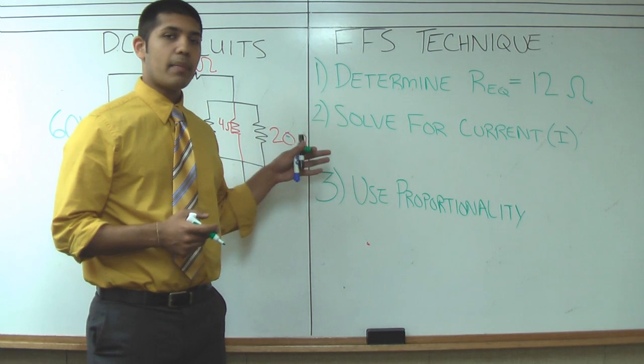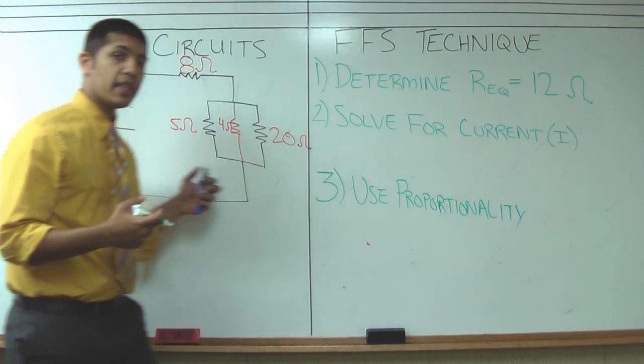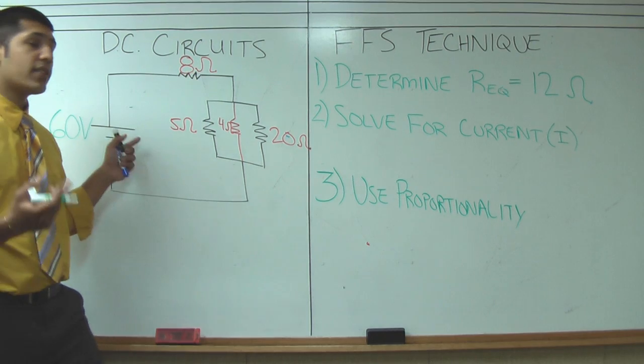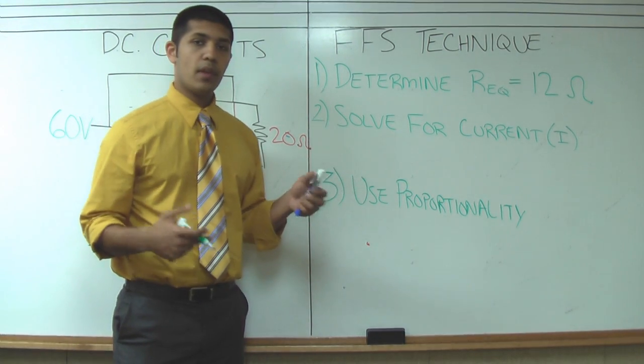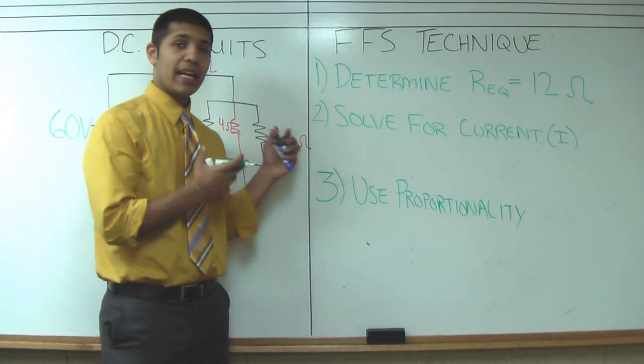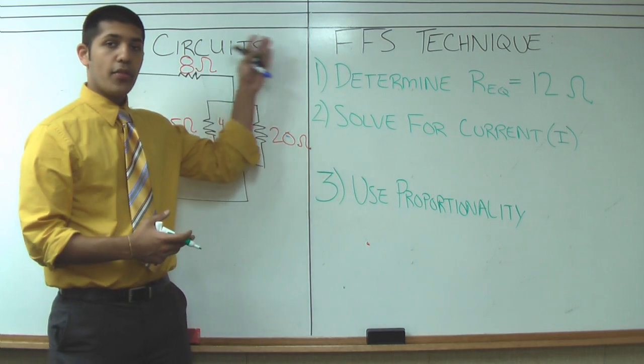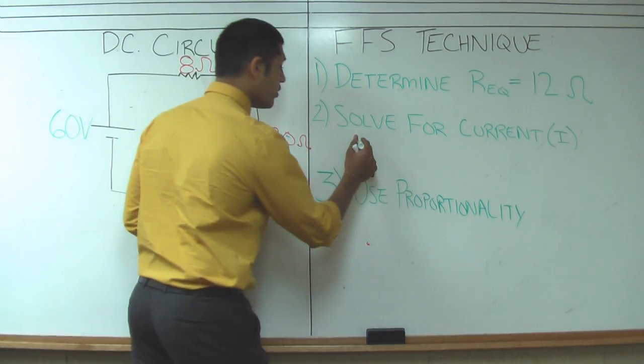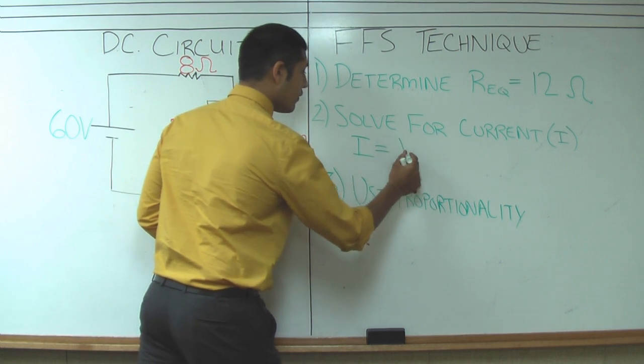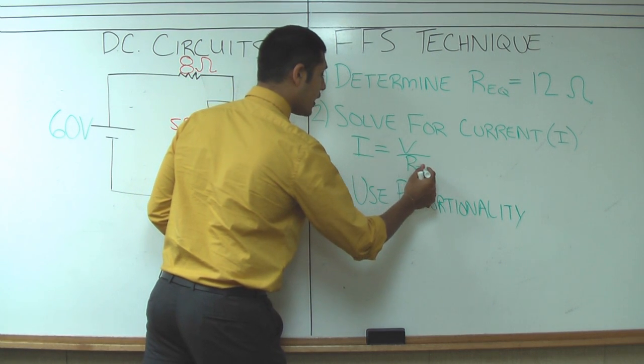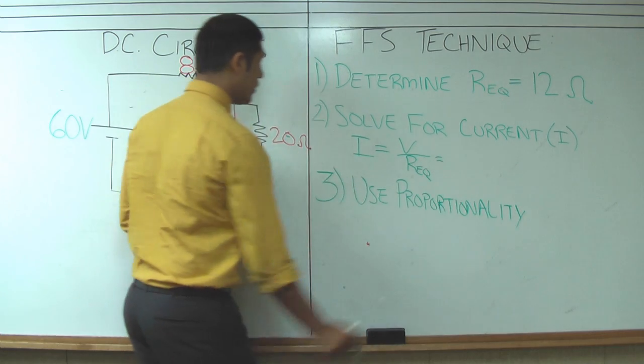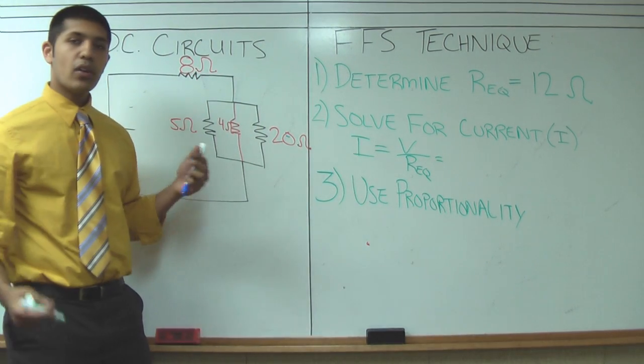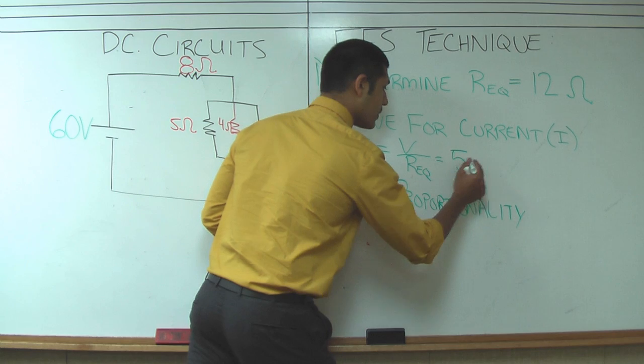The second step is taking that information and dividing by the voltage source and solving for the current. So we can determine how many electrons will actually be traveling through the wires of the circuit. The current is equal to V over REQ which is going to give me 60 over 12 or 5 amps.